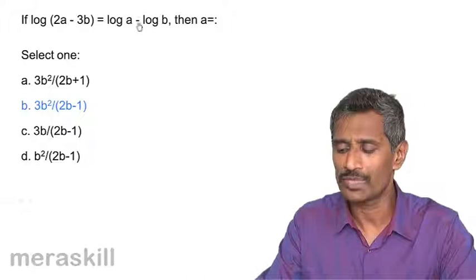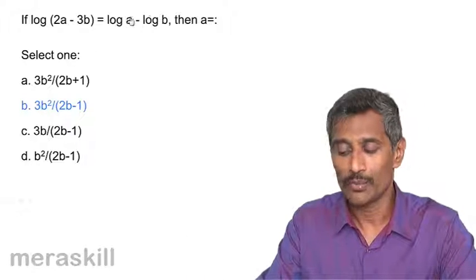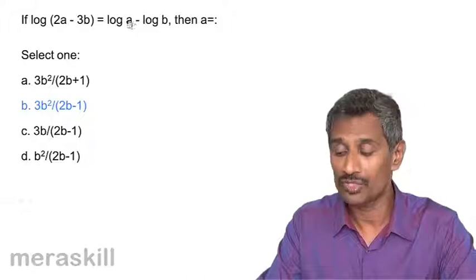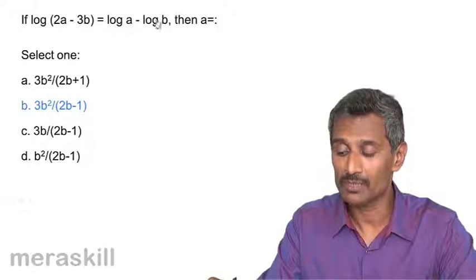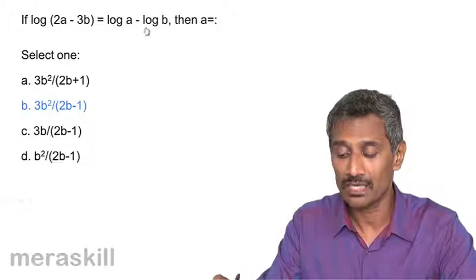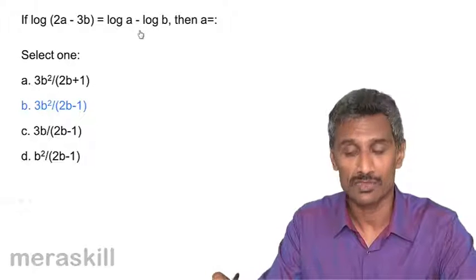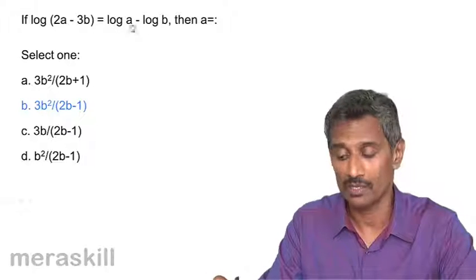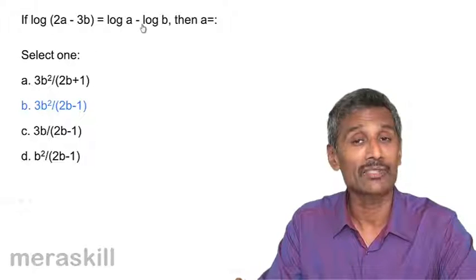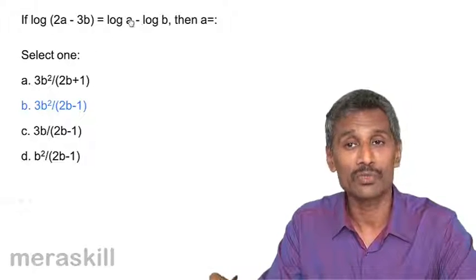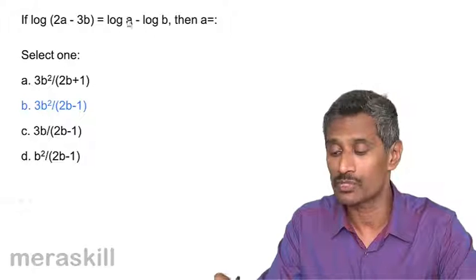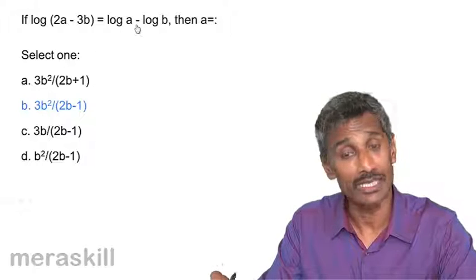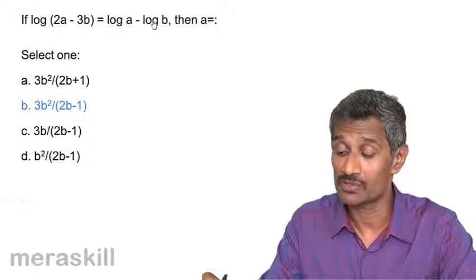So in all these kinds of questions — we've done 3 to 4 examples — collect all the terms, convert to a simple expression. When both sides have logarithms of two different numbers and they are equal, the numbers themselves are equal.